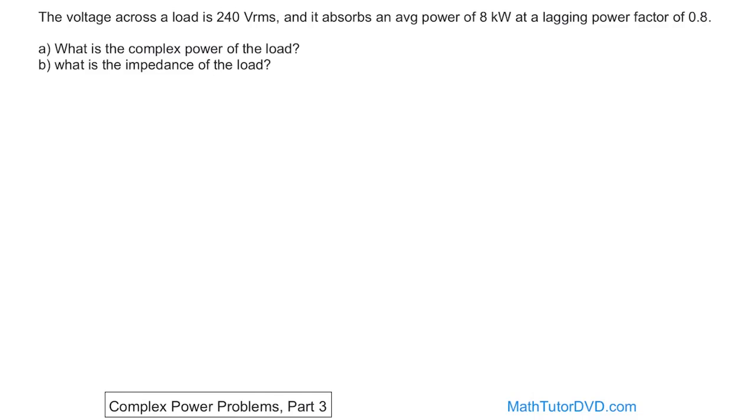There's no circuit given to you. You're just given a bunch of words and you're told that you have some load and the voltage across this load is 240 volts RMS. So we're dealing with RMS values. You're also told that the load absorbs an average power of 8 kilowatts and a lagging power factor of 0.8. So you're given the power factor.